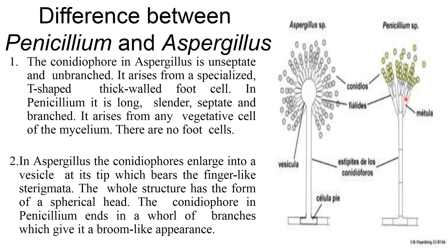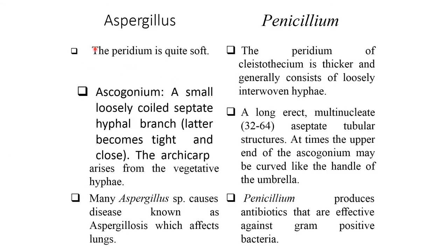The whorl of branches in Penicillium gives it a broom-like appearance. In Aspergillus, the peridium is quite soft, whereas in Penicillium the peridium of the cleistothecium is thicker and generally consists of loosely interwoven hyphae.